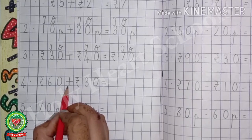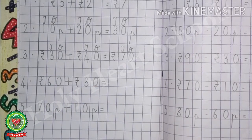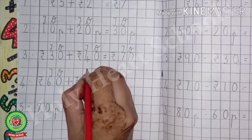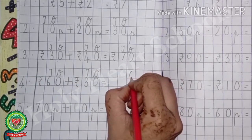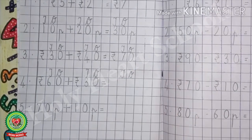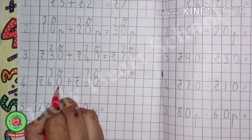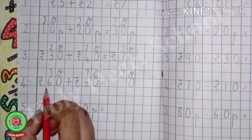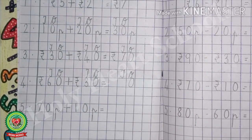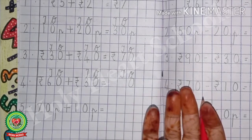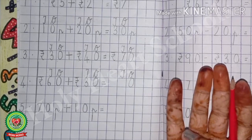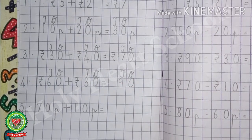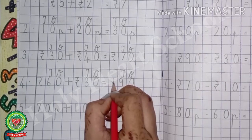Number 4: rupees 60 plus rupees 30. Before adding, write the place value chart — 1s and 10s on both numbers and in the answer. 0 plus 0, the answer is 0 — write 0 under 1s. Next, 6 plus 3: counting on from 6, we get 9 — write 9 under 10s. Again write the unit, which is rupees.